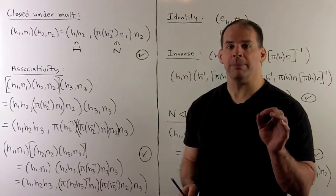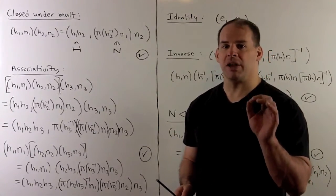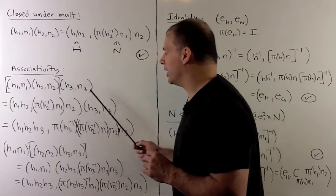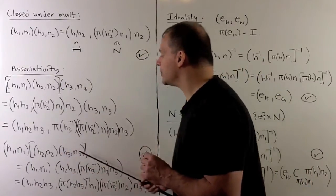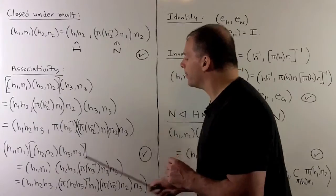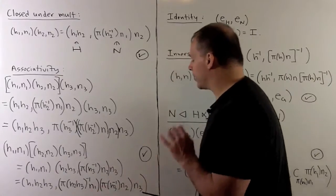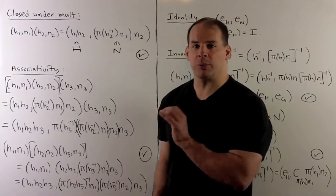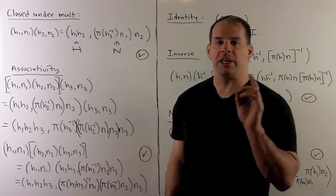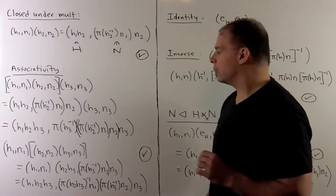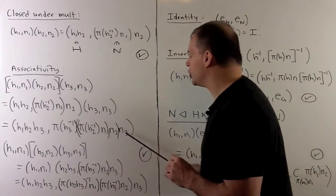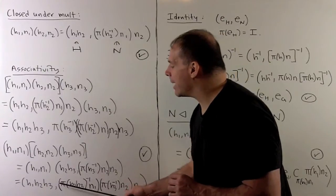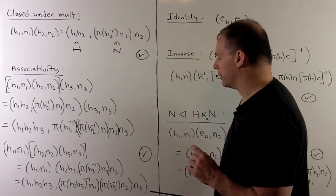For associativity, there's nothing deep or insightful here. We just have to write out our multiplication in the two different ways, see what comes out, and make sure that they're equal. Of course, we want to be generous with the parentheses. The key here is, when we get to the end on each multiplication, we use the homomorphism property of pi to get things to match up.